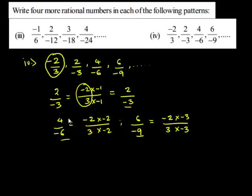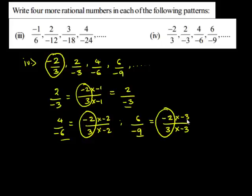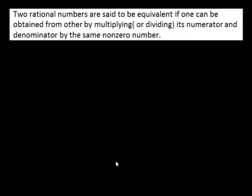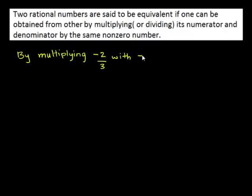Similarly, 4 upon negative 6 is obtained when negative 2 upon 3 is multiplied by negative 2, both in the numerator and in the denominator. Similarly, 6 upon negative 9 is obtained when negative 2 upon 3 is multiplied by negative 3. So we have obtained the first 4 terms by multiplying negative 2 upon 3 with negative 1, negative 2, and negative 3 respectively.